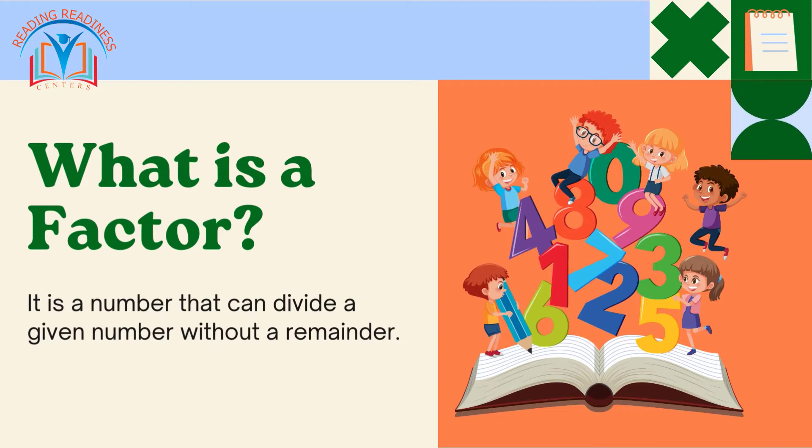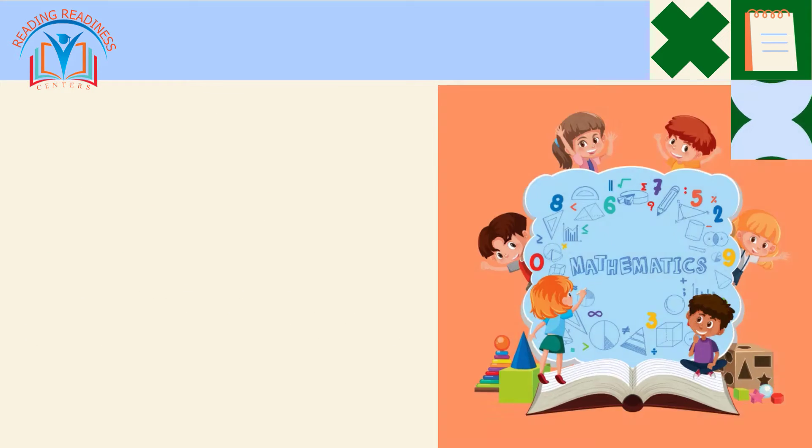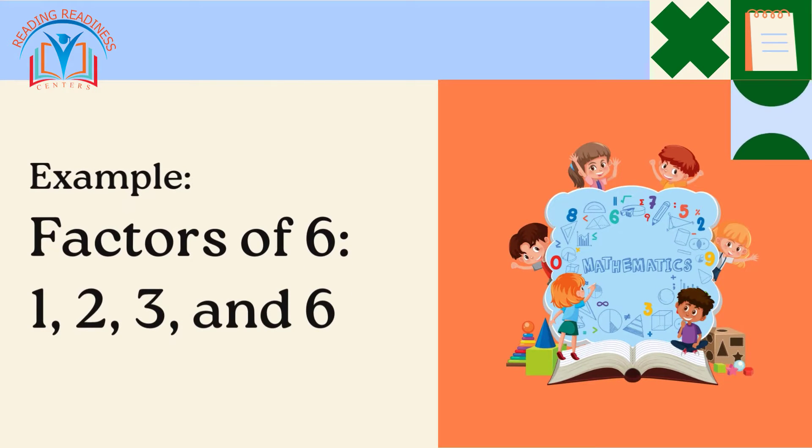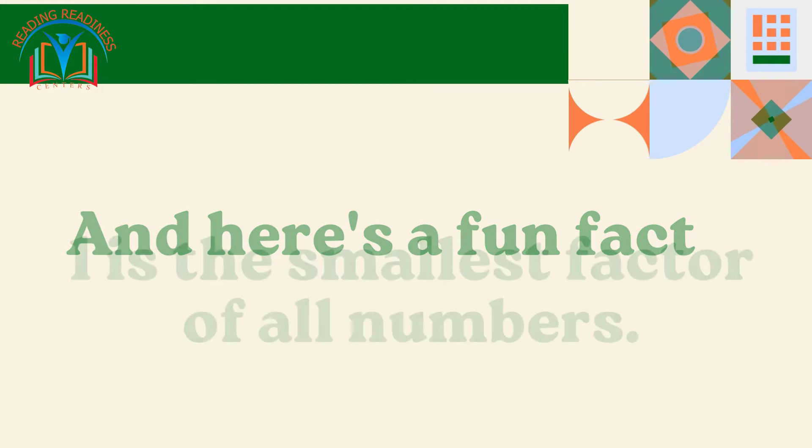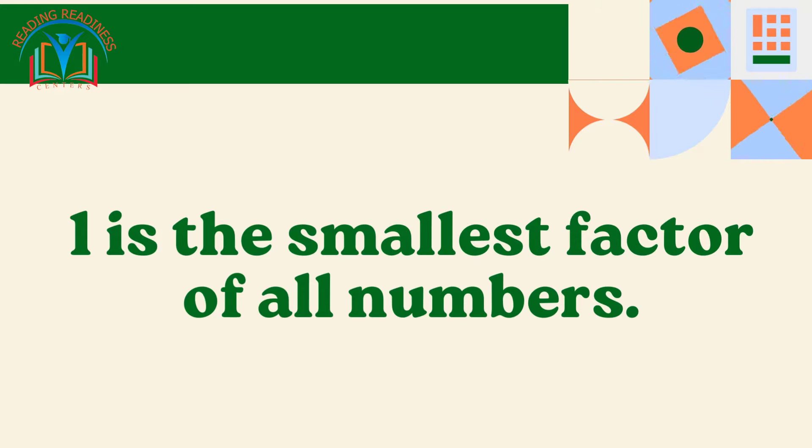It is a number that can divide a given number without a remainder. For instance, the factors of 6 are 1, 2, 3, and 6. And here's a fun fact: 1 is the smallest factor of all numbers.